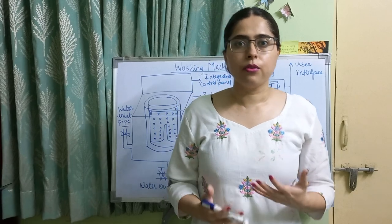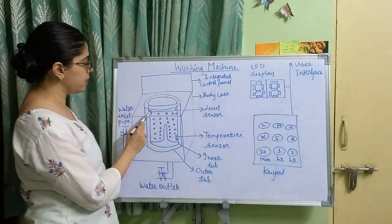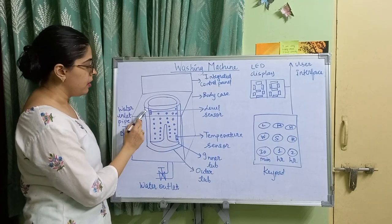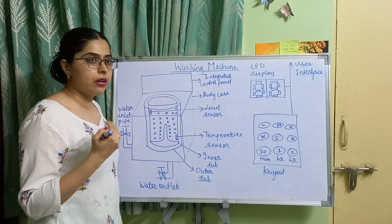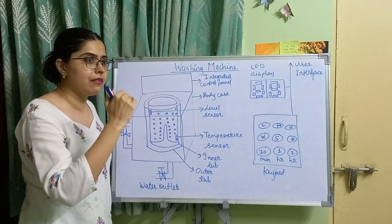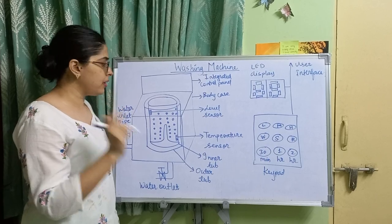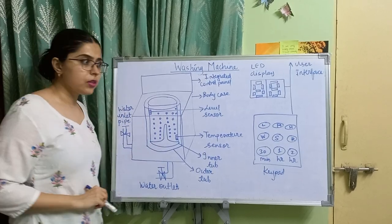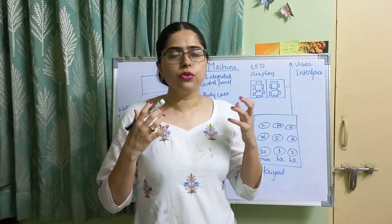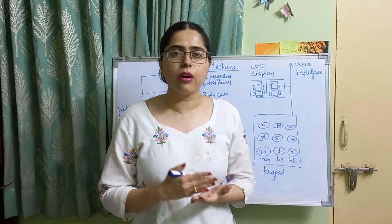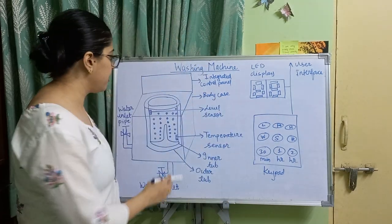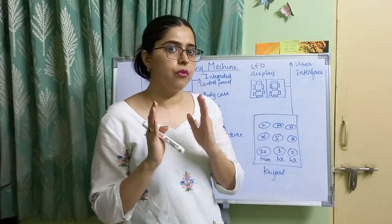The sensors of the washing machine — you can see these two sensors highlighted here. This is a level sensor and this is a temperature sensor. The level sensor detects the level of water inside the machine — whether it is low, medium, or high. The temperature sensor is used to sense the temperature of the water, whether the water is hot, cold, or warm.